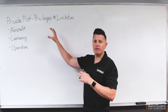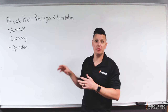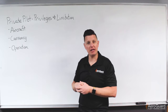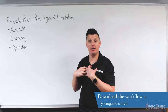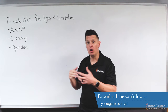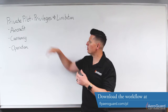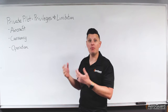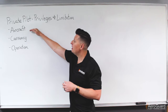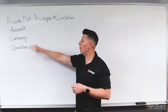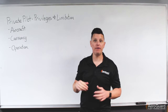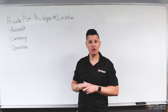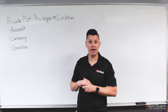What I'm going to do for the purposes of this conversation is divide up privileges and limitations for us as a pilot into three categories. I'm going to make this kind of like a flowchart. If we have an example scenario of 'can you do this flight,' there are three basic criteria we'll ask ourselves about: the aircraft, currency, and the operation itself.